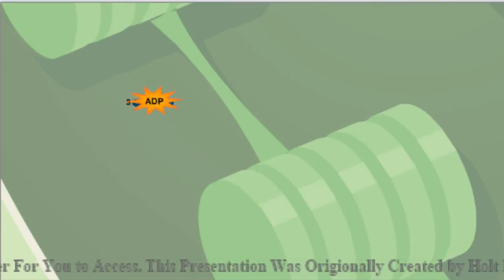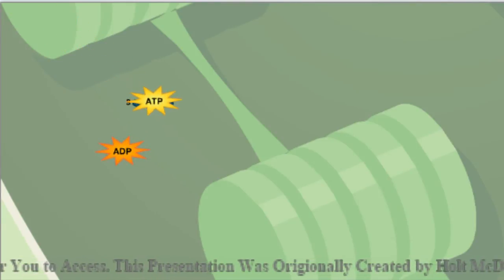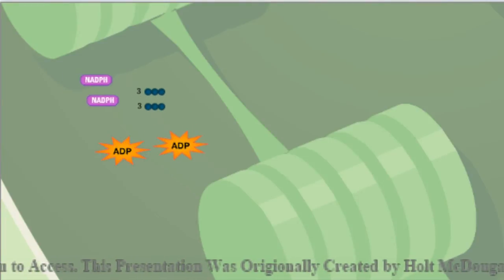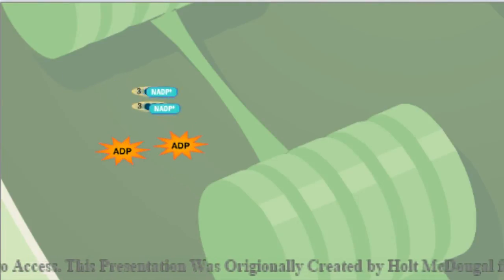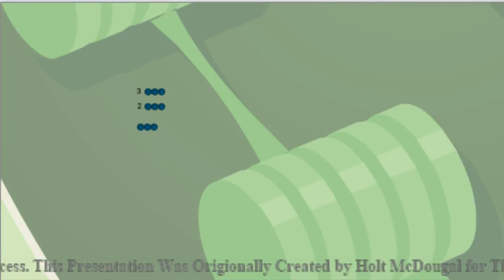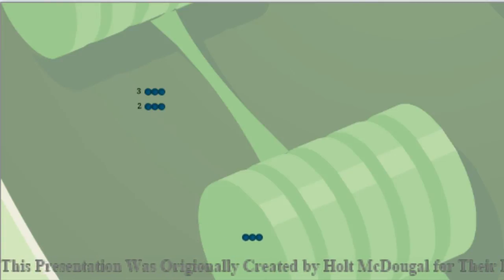Energy is added. The six-carbon molecules are split to form three-carbon molecules. More energy is added, and the molecules are rearranged into higher energy molecules. A high-energy three-carbon molecule exits for every three carbon dioxide molecules that enter.